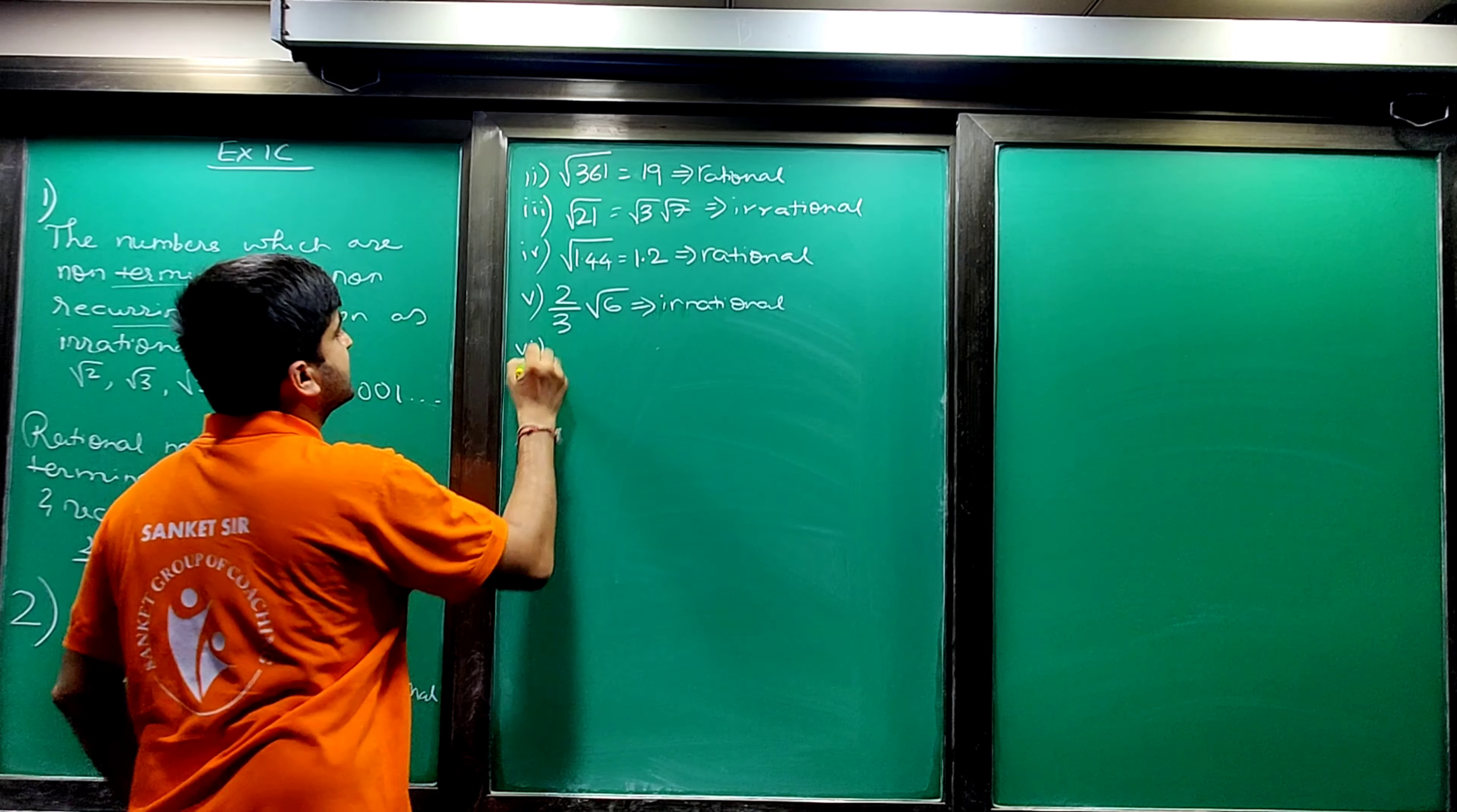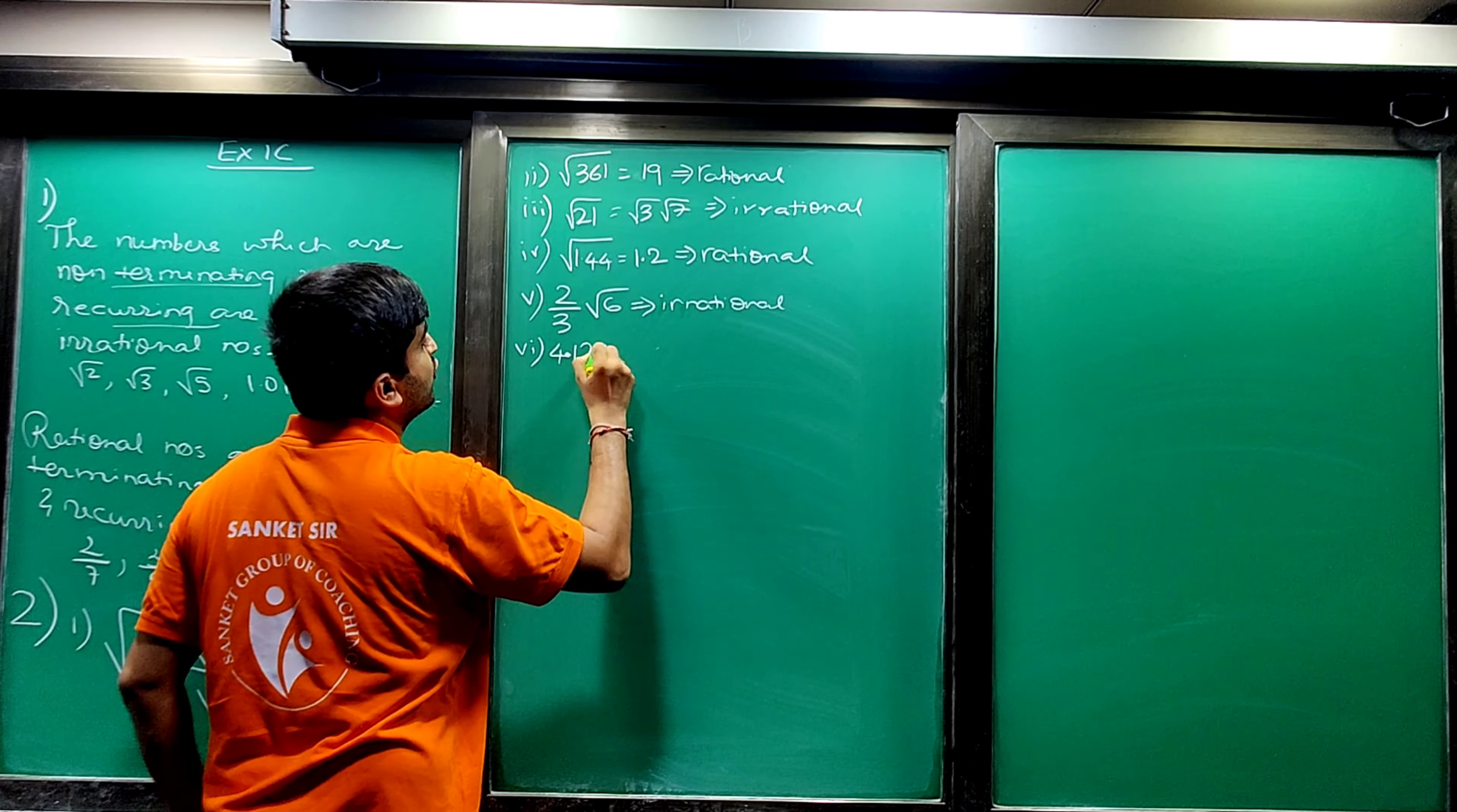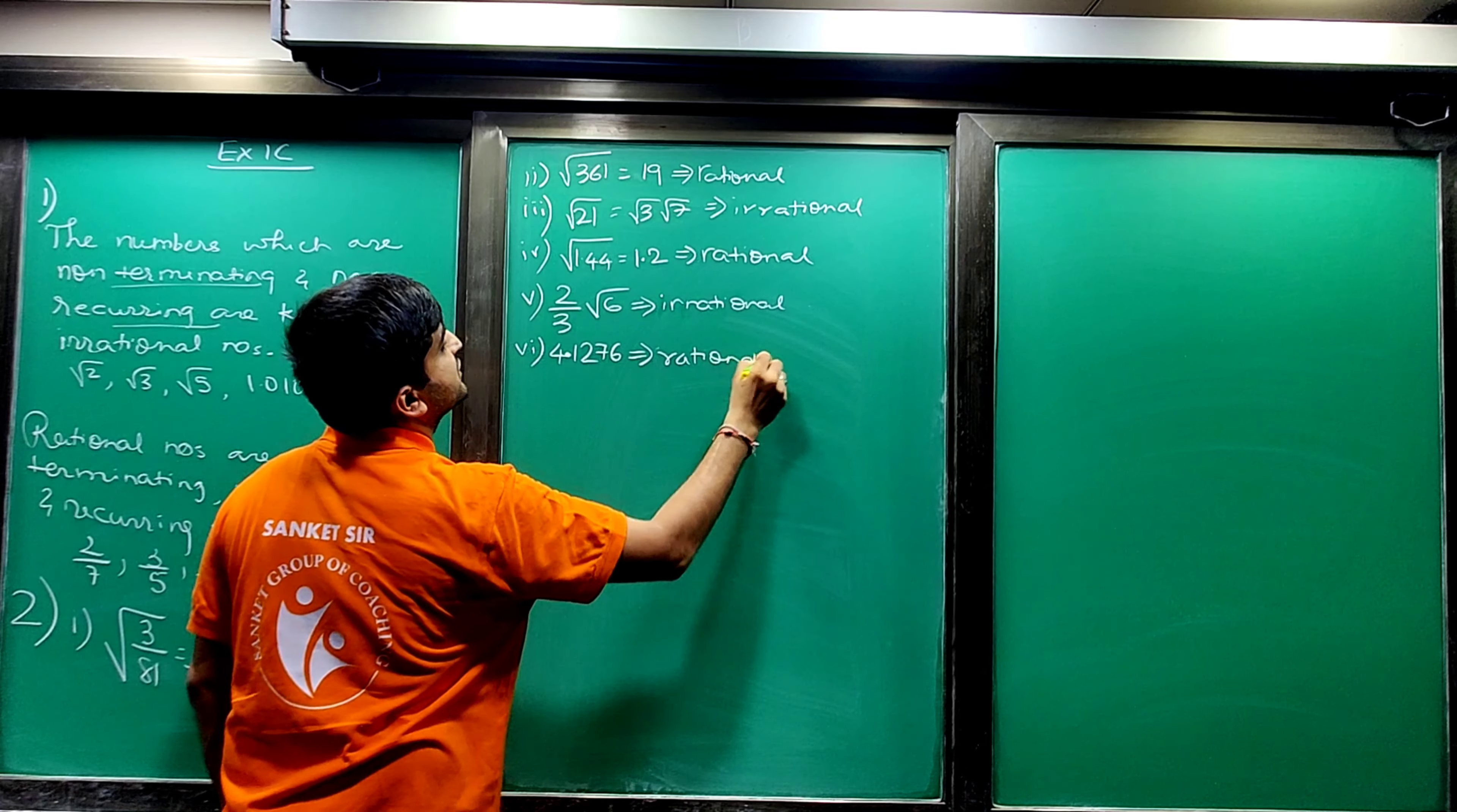Then sixth is 4.1276. How is this number? This is a terminating number. As it is a terminating number, your answer is rational number.